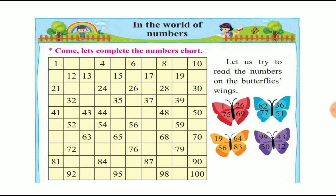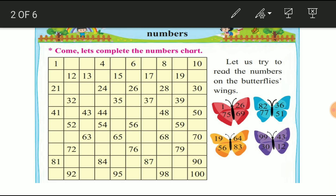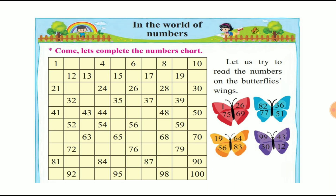हमने यहां पर serial order बताया है कि 1 से लेकर 10 तक। यह serial order कभी-कभी हमें बीच में से भी number लिखने को आता है, वो आगे आएगा। अगर हमें back counting लिखनी है, तो जैसे 10 का back लिखना है — 10 से उसका back number लेना है: 10, 9, 8, 7, 6, ऐसा लिखेंगे।